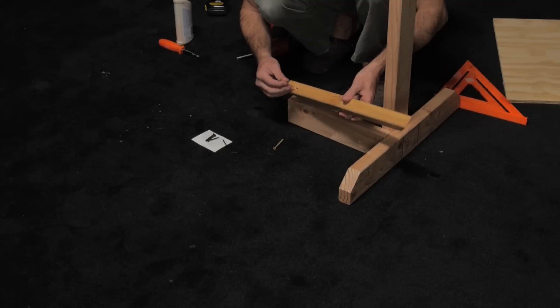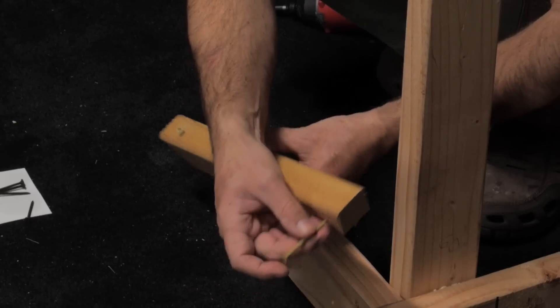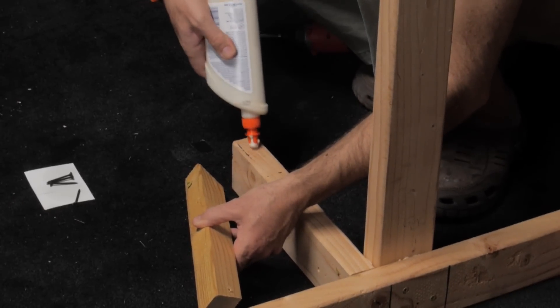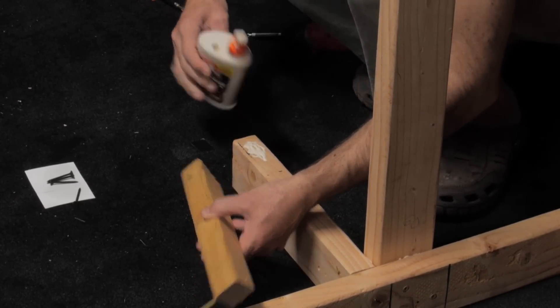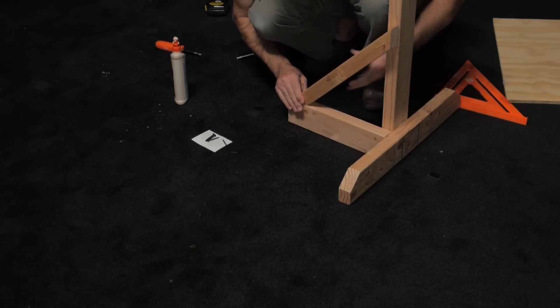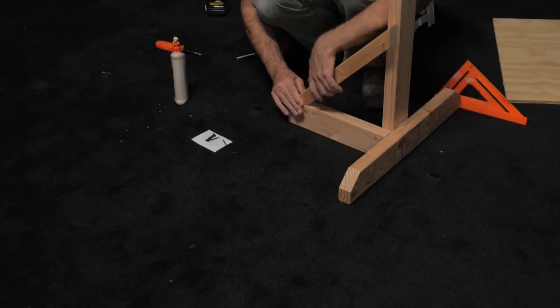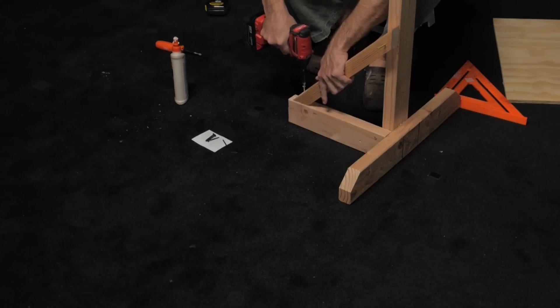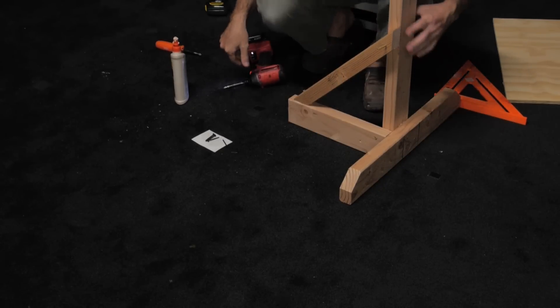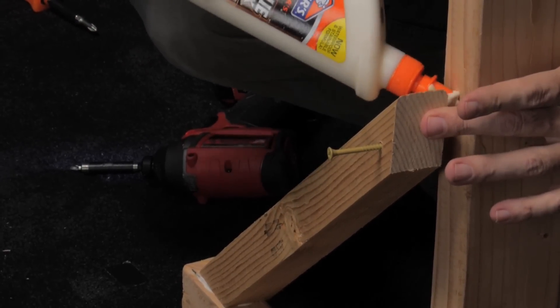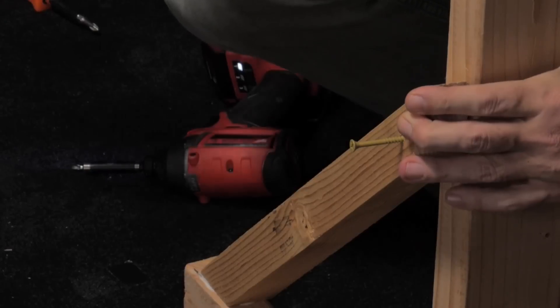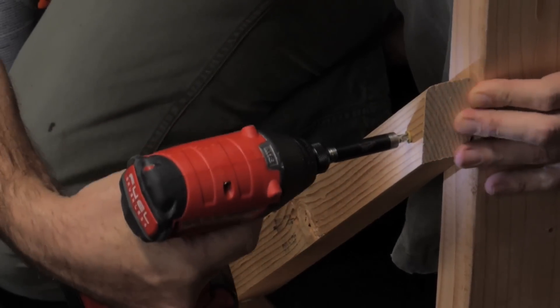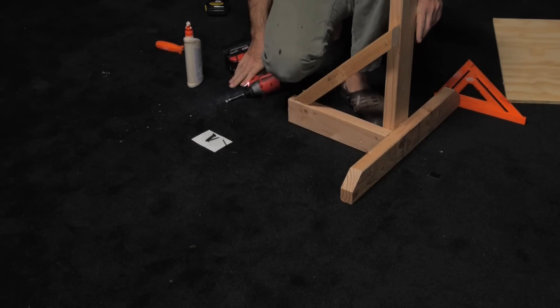So I'm going to now put the 45 degree on and see this one is drilled like that and this one is drilled like that because it's going to go right there. So I'll put a little wood glue and screw this one in first. And then put a little wood glue on this one.